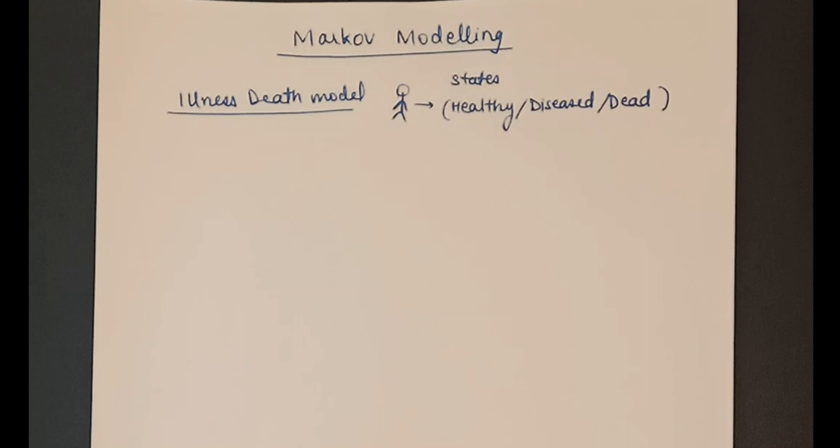For example, a healthy person can go to diseased state. From diseased state, he can become healthy again or be in the dead state and so on.